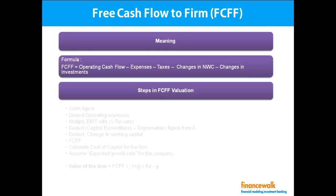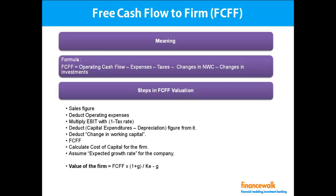Let's see the different steps in FCFF valuation. First, take the sales figure. Second, deduct operating expenses from it — you will get the EBIT figure. Third, multiply EBIT with (1 minus tax rate). Fourth, deduct capital expenditures minus depreciation from it. Next, deduct the change in working capital — then you will get the FCFF figure. After that, calculate the cost of capital for the firm, and then assume an expected growth rate for the company, which should not be significantly higher than the nominal growth rate of the economy.